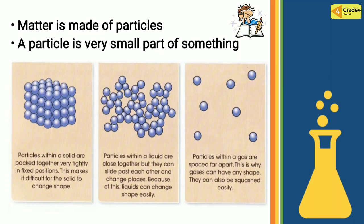Matter is made of particles. The particles are very small parts of something. Scientists use a scientific model called the particle model to explain how and why something happens. This model says that all matter is made of particles. In real life, the particles in matter are too small to see. In the model, we can show the particles as little balls. The particles in matter are always moving, even in things that look still. The amount of movement of the particles decides whether something is a solid, liquid, or gas.